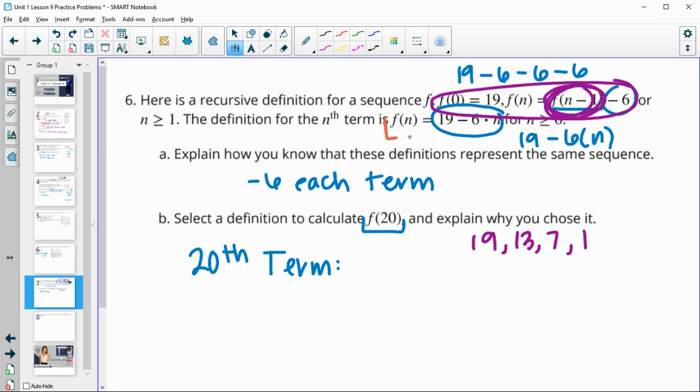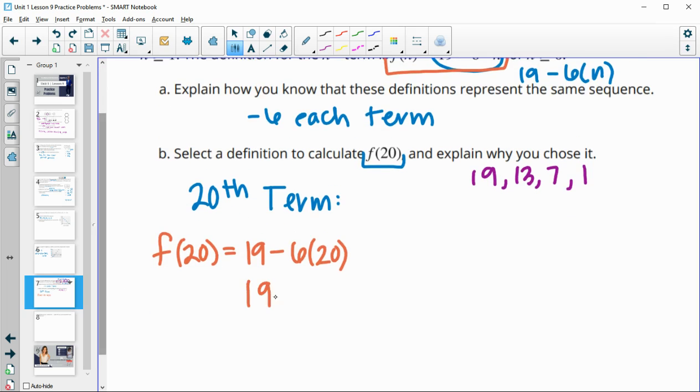In this other one, you just need the term number that you're finding. So if I'm going to find the 20th term, this one says take 19 minus 6 20 times. So then I'm just going to have to do 19 minus 120 to find out that the 20th term is negative 101. So you don't have to have every previous term in order to get it. So that's why I would choose this one.